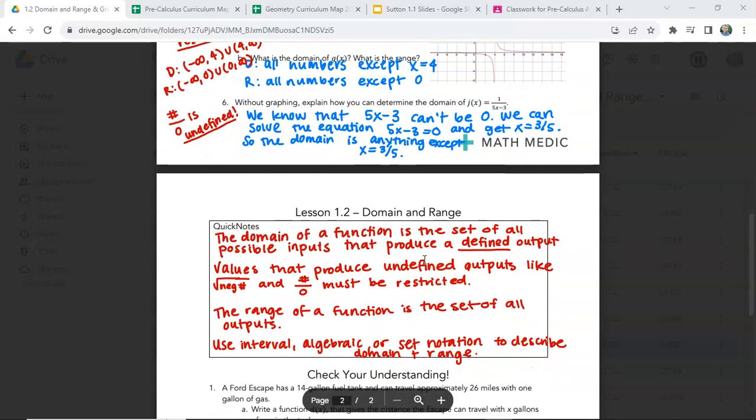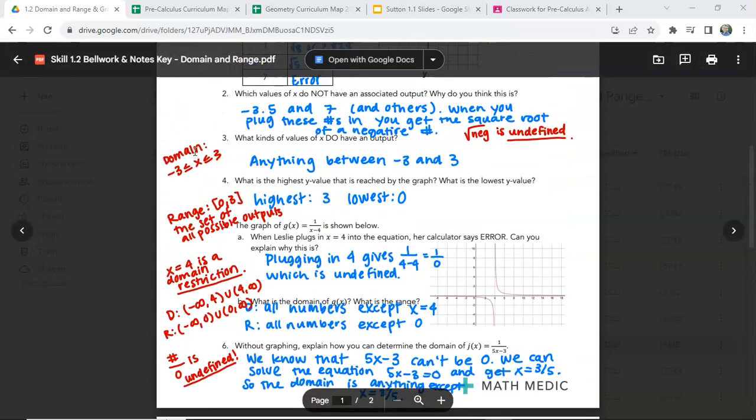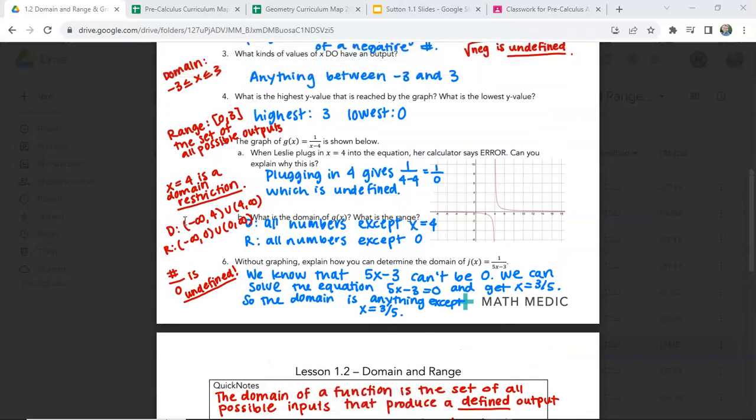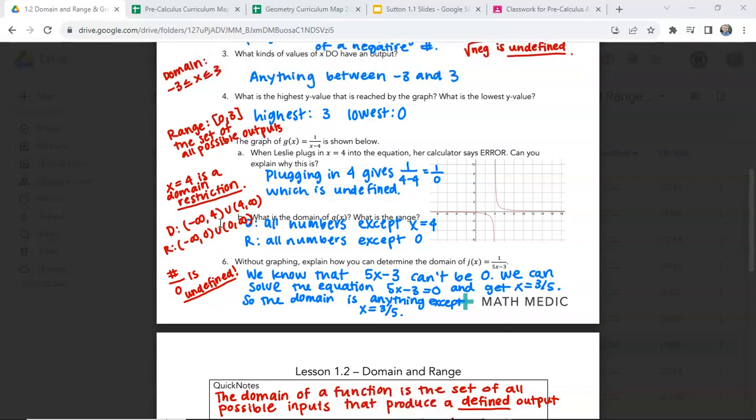So moving on to the quick notes. So the domain of a function is the set of all possible inputs that produce a defined output. Values that produce undefined outputs like square roots of negatives or divide by 0 must be restricted. The range of a function is the set of all outputs. Use interval, algebraic, or set notation to describe domain and range. So the algebraic notation is this less than equal to stuff that we've seen before. The set notation is the stuff that might be new to you, the parentheses and the brackets.